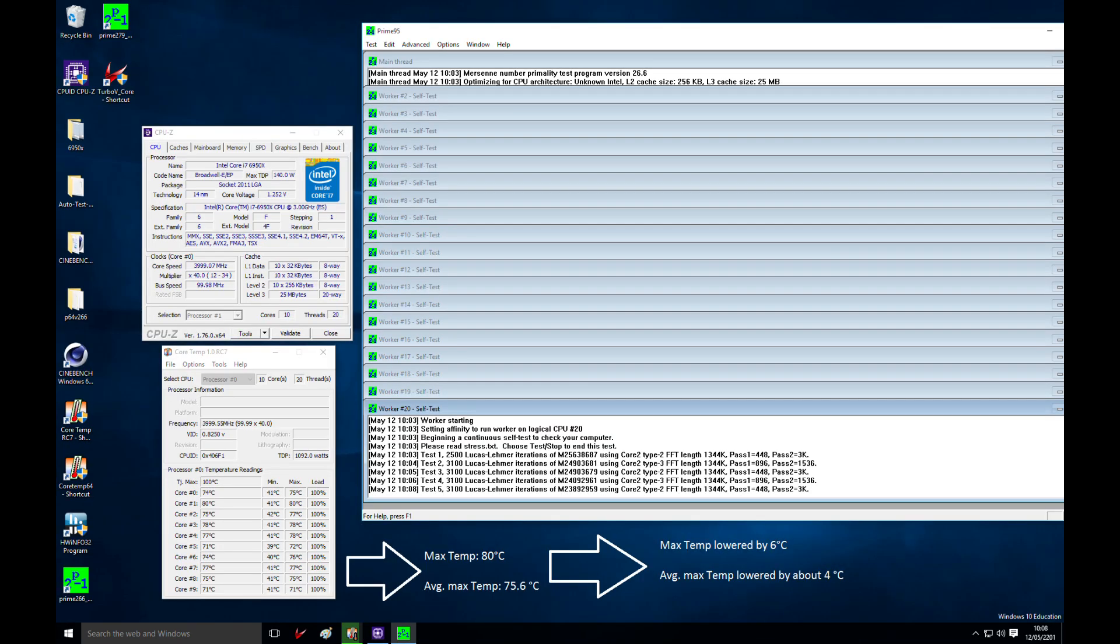Let's take a look at this screenshot which I took after delidding. Now you can see the settings are the same - still 4 GHz at the same voltage, also same Prime95 setting. You can see the maximum temperature dropped to 80 degrees while the average maximum temperature dropped to 75.6 degrees. This means the maximum temperature was lowered by 6 degrees and the average temperature lowered by around 4 degrees Celsius.